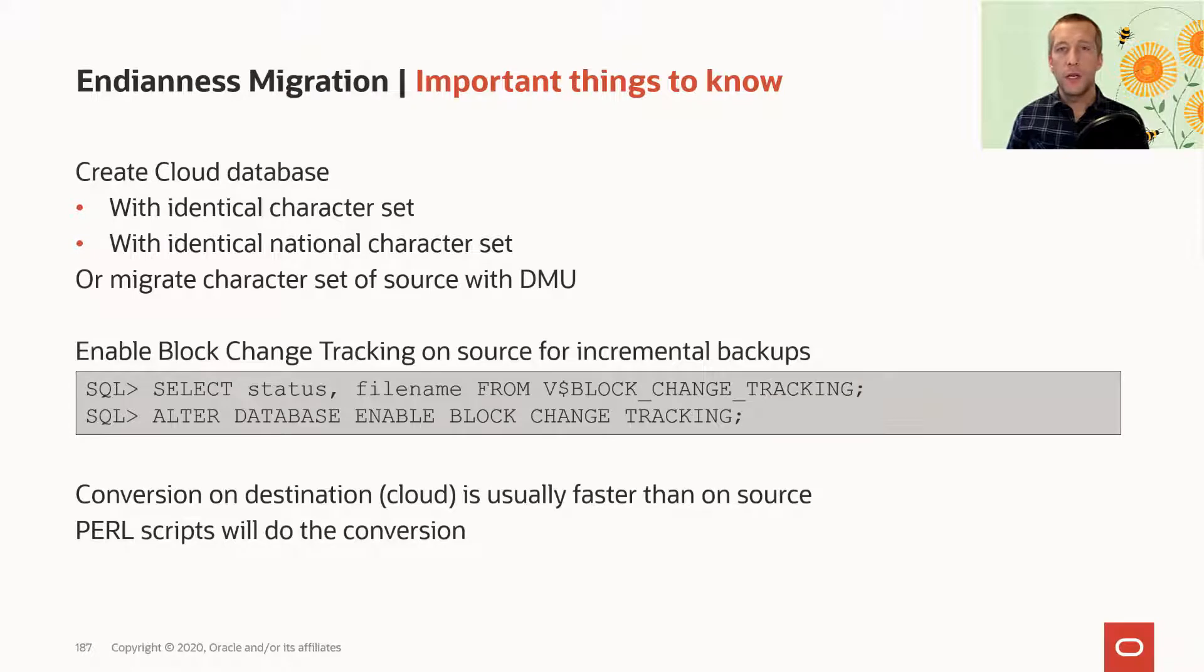I highly recommend that you enable block change tracking. Now note this is an enterprise edition feature, but by enabling that, you will make your incremental backups run much, much faster. If you don't enable it, RMAN will have to scan the entire source database to identify the blocks that are changed when it does the incremental backup. In contrast, with block change tracking, RMAN can just look in the change tracking file and quickly identify those blocks.